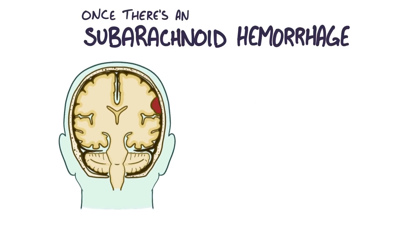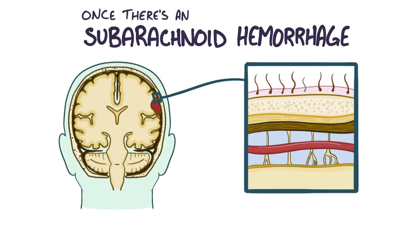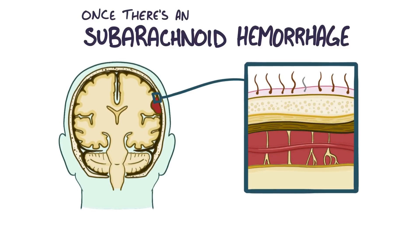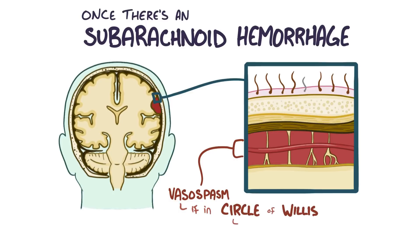Another complication is that blood vessels bathing in a pool of blood can start to intermittently vasoconstrict, which is called vasospasm. If the vasospasm affects arteries in the Circle of Willis, it will reduce the supply of blood flow to the brain, causing further ischemic injury.